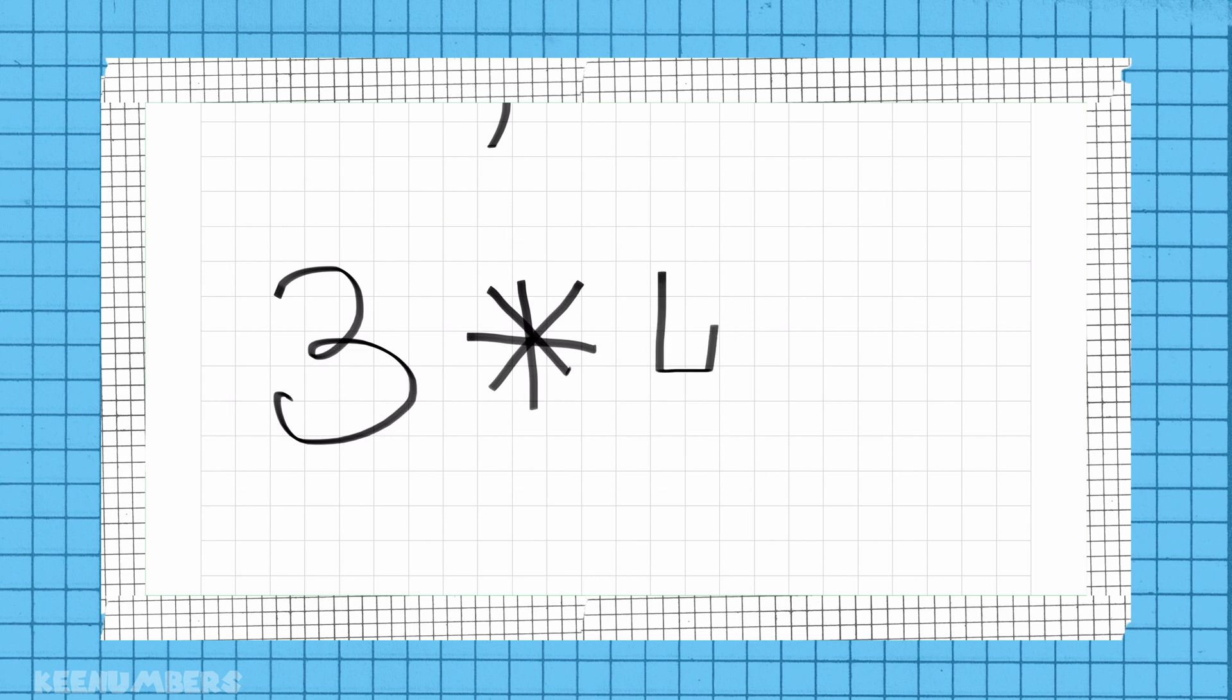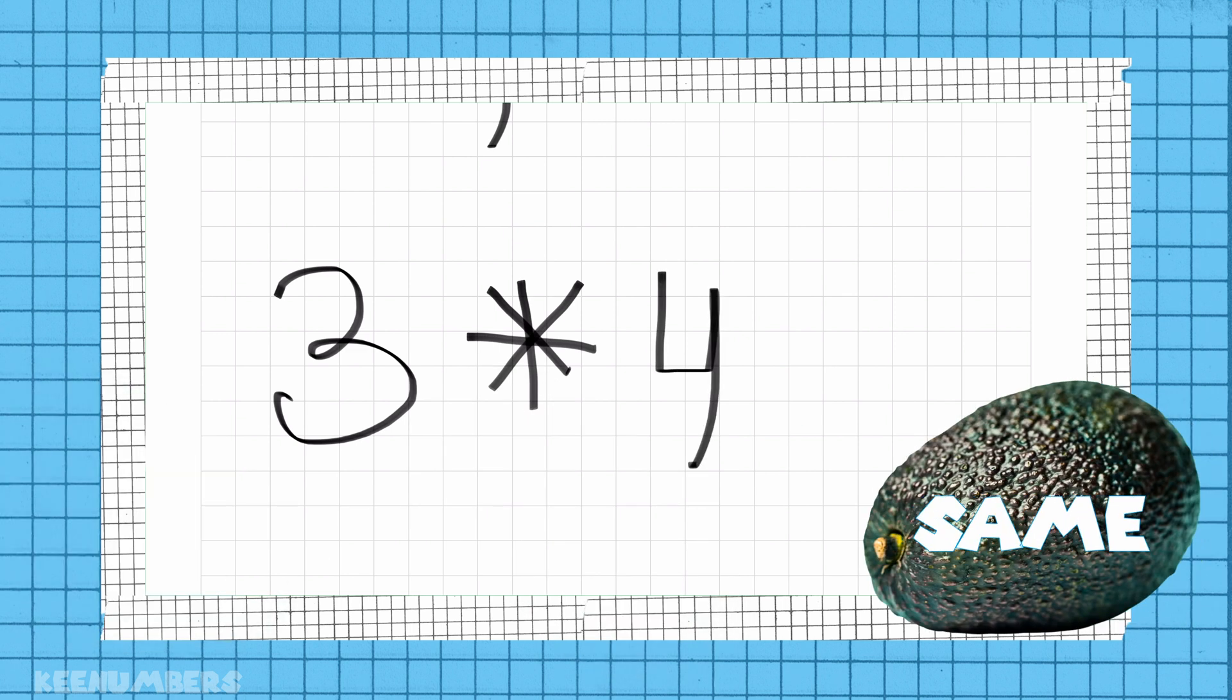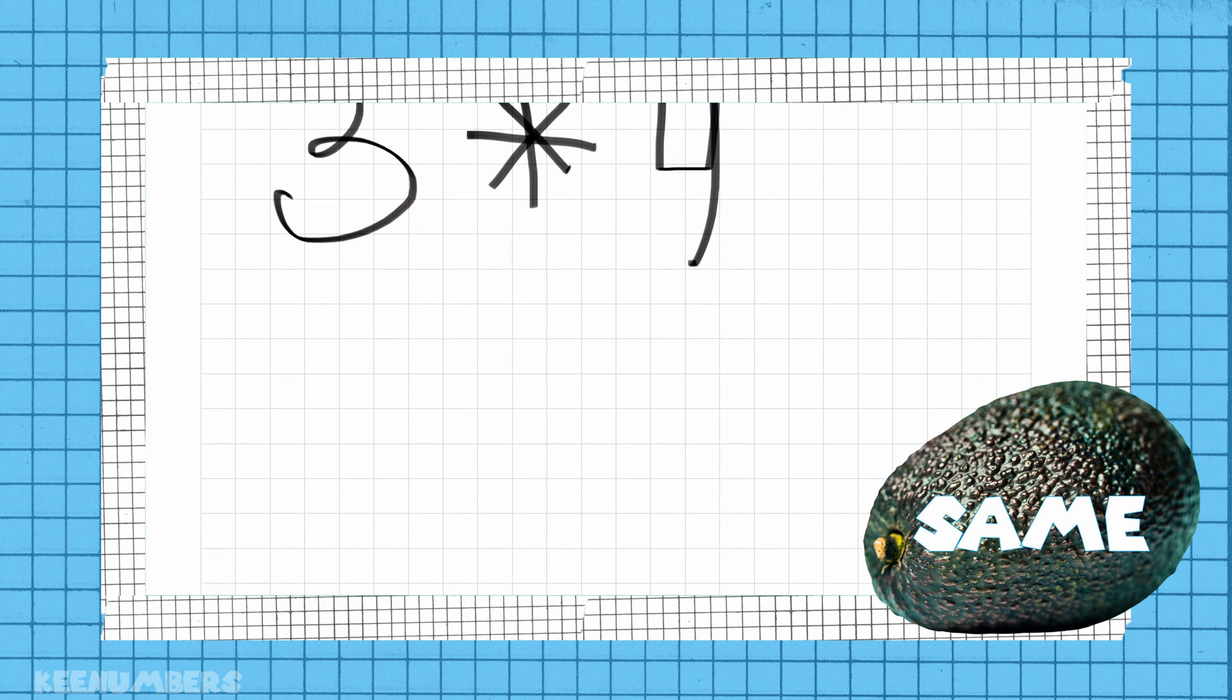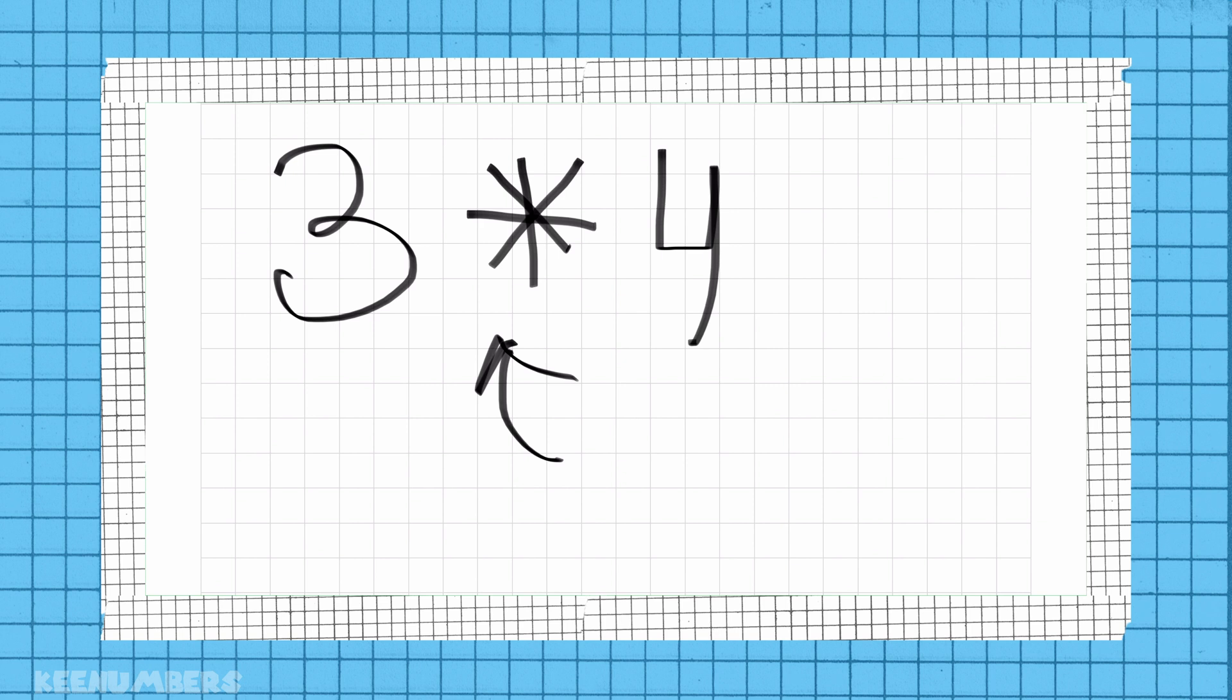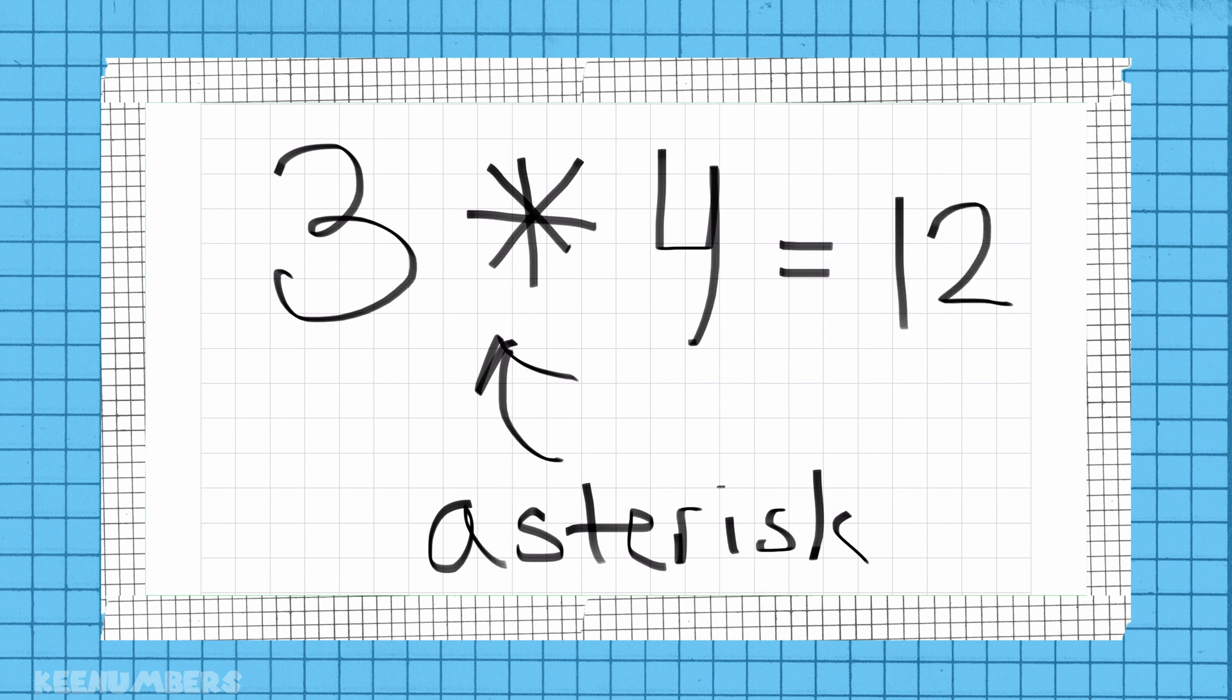3 times 4. Razor Crest times Luke Skywalker. No, not the Razor Crest times Luke Skywalker. 3 times 4. This, again, is the asterisk. Asterisk. I'm from the south, I don't pronounce things the way they should be pronounced. 3 by 4, you know that one, that's easy, that's 12.